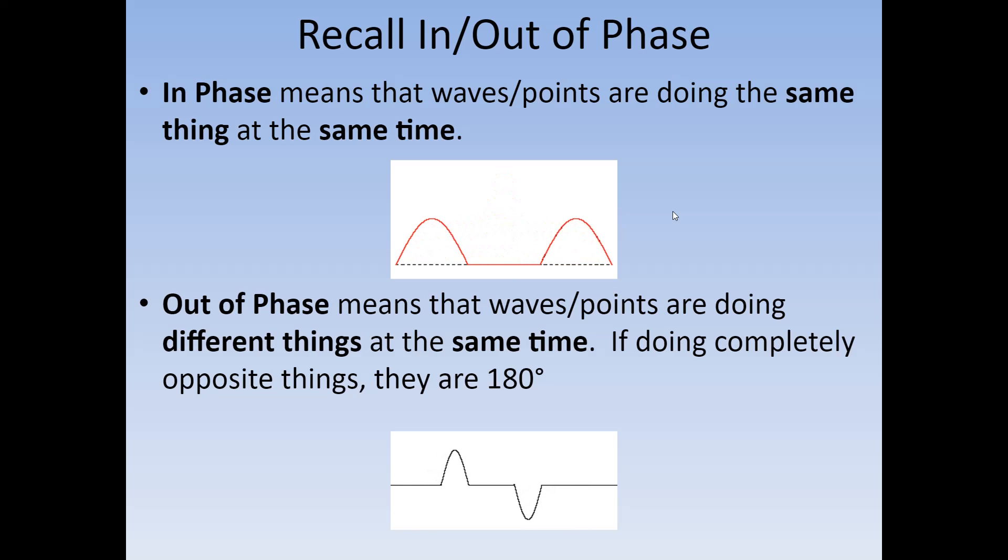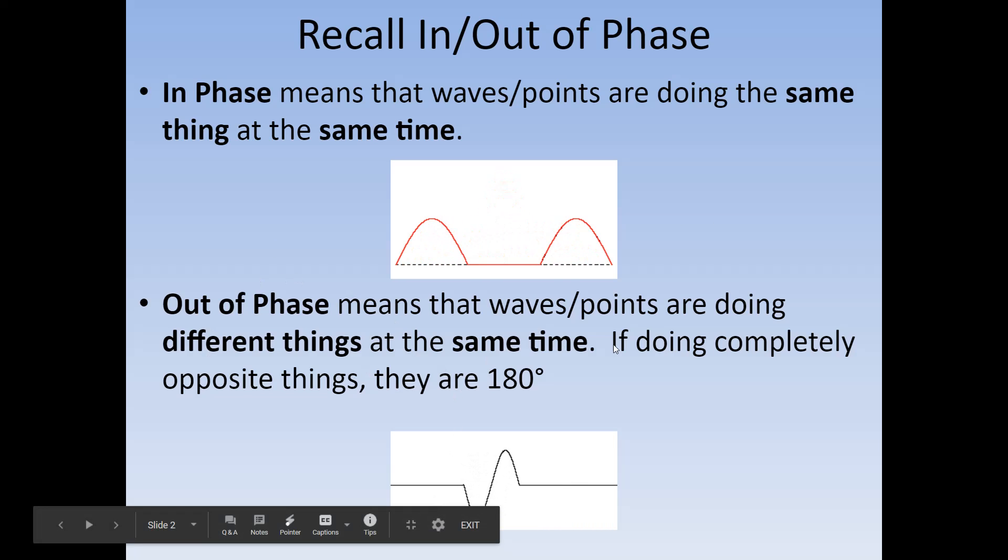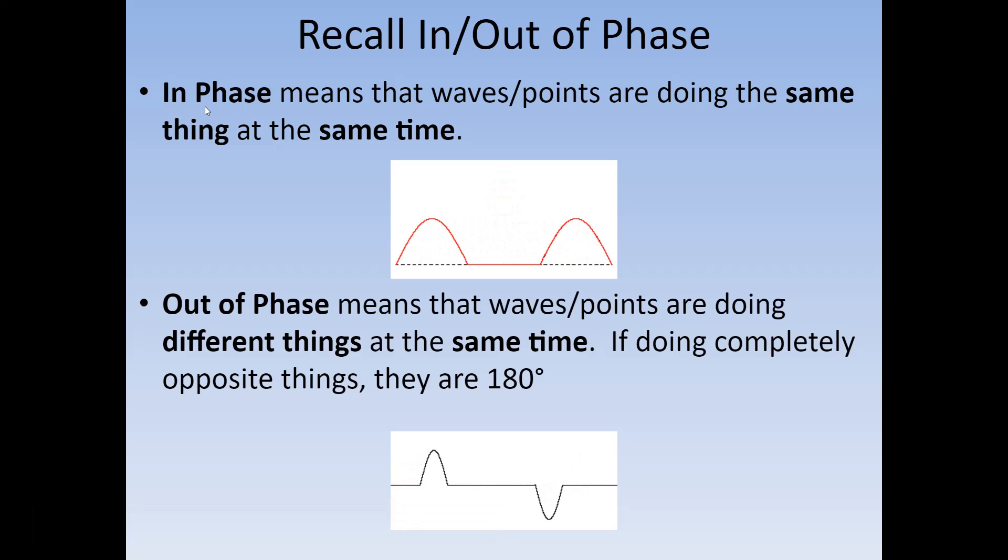There are two types: we talked about in phase and out of phase as far as points on a wave, but it also does refer to the waves themselves. So you can have two waves that are in phase, which by the same definition as the points are doing the same thing at the same time. You have two crests coming together or out of phase, meaning they would be doing the opposite.